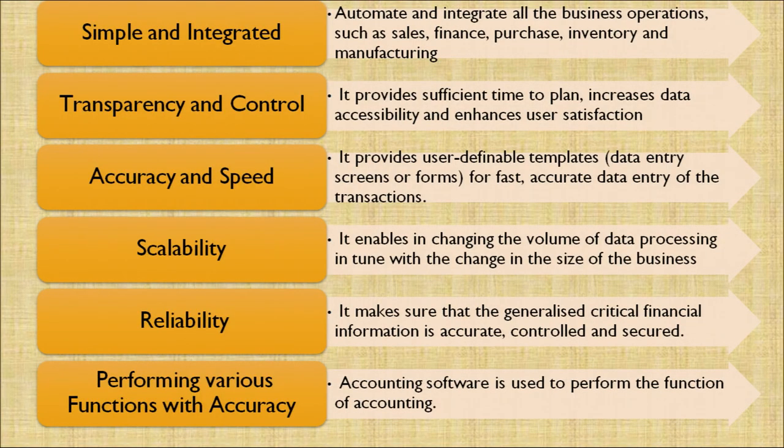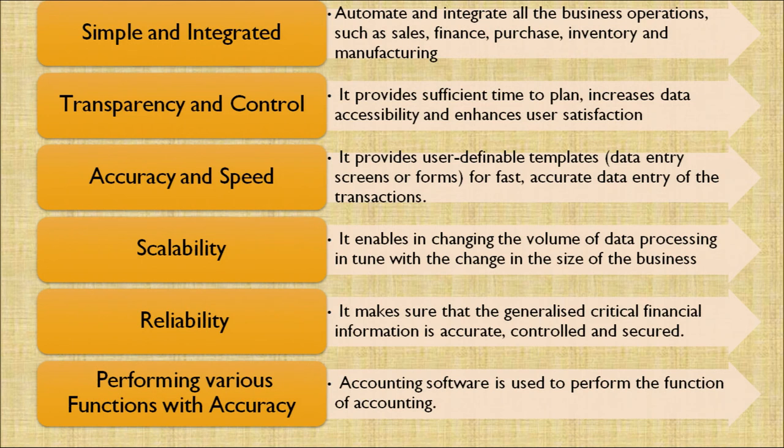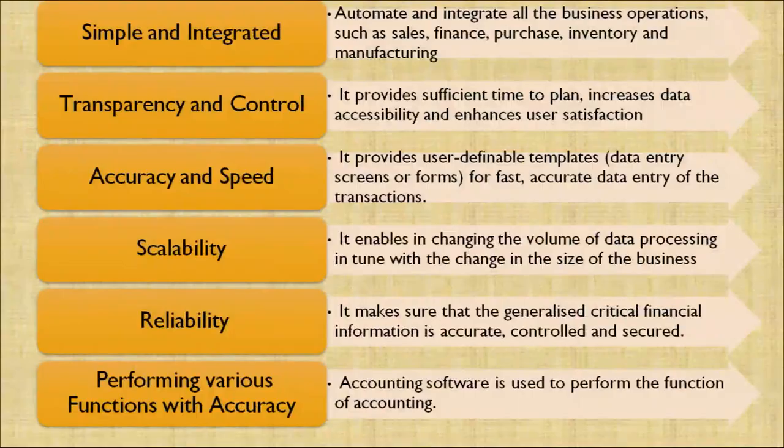Fourth, scalability: it enables changing the volume of data processing in tune with the change in the size of a business. For example, the business has just started with zero rupees turnover and has increased to a thousand crore rupees of turnover — the same computer can help us throughout. Fifth, reliability: it makes sure that critical financial information is accurate, controlled and secured, so we can rely on accounting entries processed through a computer-aided system. Last, performing various functions with accuracy: accounting software is used to perform the functions of accounting, and accounting is processed with accuracy through computer-aided systems.